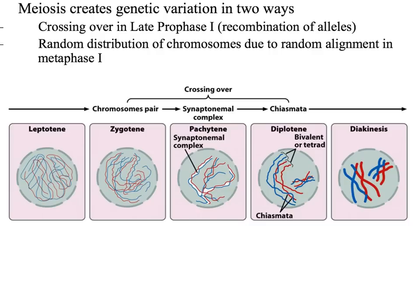Meiosis, combined with sexual reproduction and fertilization, creates genetic variation — mitosis does not make cells that are genetically different from each other. The creation of genetic variation can happen in two ways. One we've already talked about a little bit: crossing over that occurs in late prophase I — that recombination of alleles, getting parts of a blue chromatid combined with parts of a red chromatid, gives a new combination of alleles along the length of the chromosome. The other way is the random distribution of chromosomes due to random alignment in metaphase I.